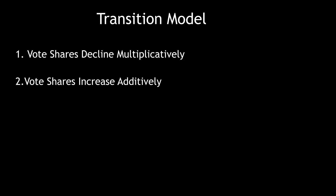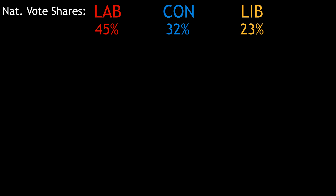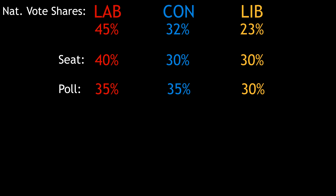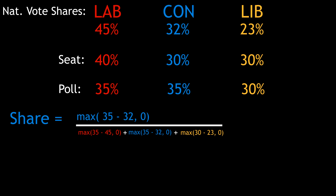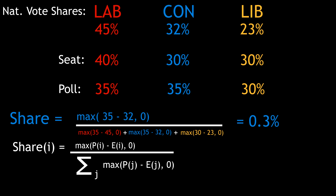To see how this model works, we'll set up an example. Say in the previous election we have certain national vote shares, and we're interested in predicting the outcome of a particular seat with its own vote shares, plus some polling data for the next election predicting new national vote shares. Let's focus on predicting the vote share for the Conservative Party. First, we work out their national vote share gain relative to other parties — if the party's vote share goes down, their gain is zero. The gain is the difference between the predicted national vote share and the current vote share, divided by the same quantity summed over all parties, using the max function to handle cases where vote share declines. For the Conservatives, the gain comes out at 0.3%, and the general expression sums over all parties.